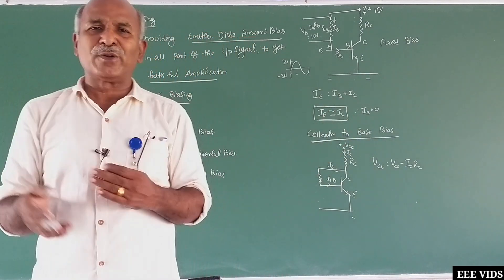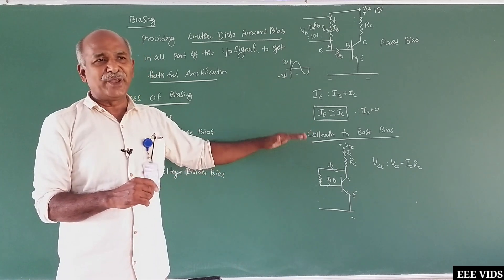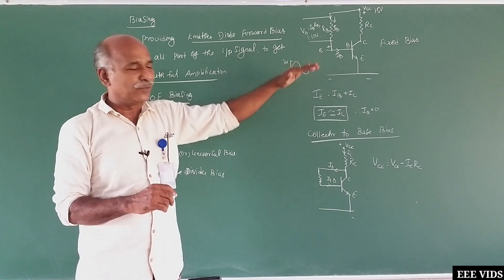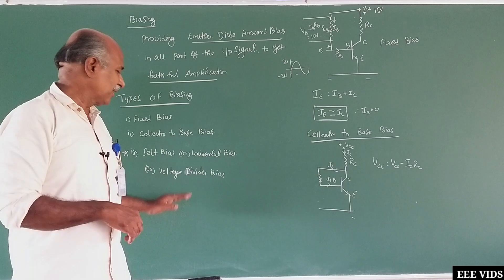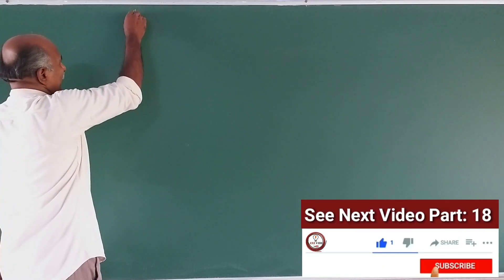This is the analysis of the bias. If we look at the circuit, the voltage is constant. This is the base to emitter voltage, it will be constant. Next is the importance of self-bias or voltage divider, self-bias or universal bias.